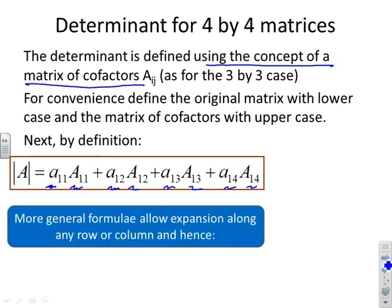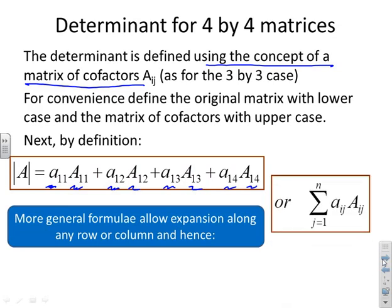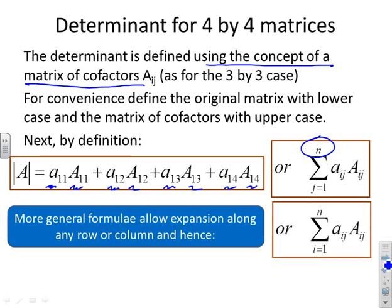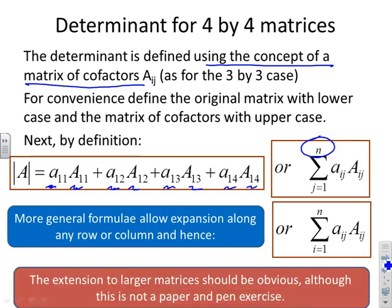Now a more general formula will allow expansion along any row or column. So you'll notice here the subtle differences I've said. I'll go up to n because if it's an n-dimensional matrix, I've got n coefficients and n cofactors to multiply and add. And I can also sum along columns.